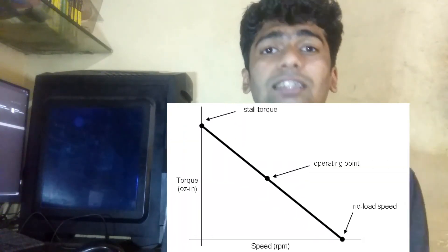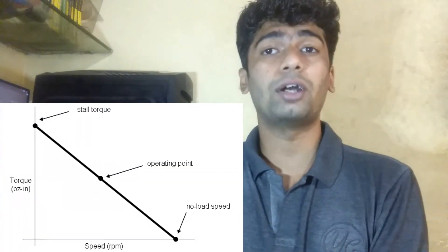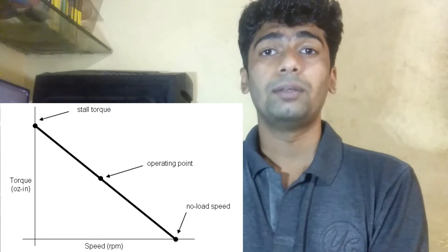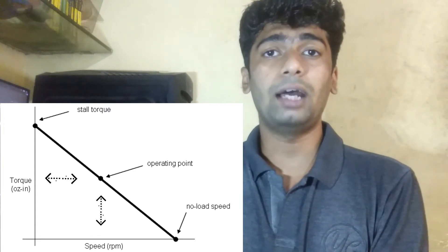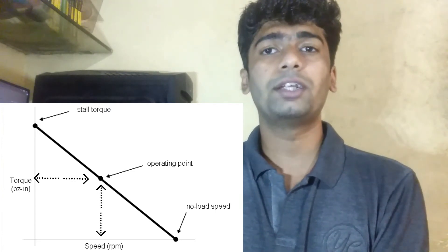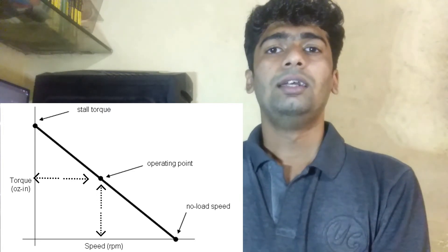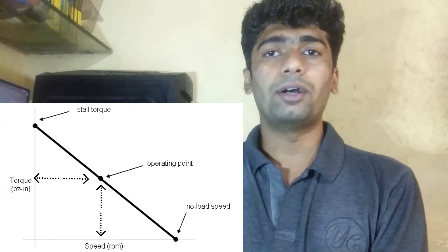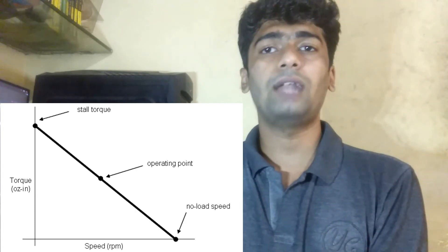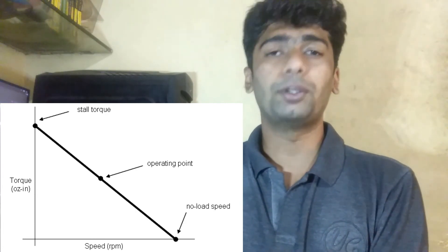We can also understand Stall Torque as the torque required to stop the motor's shaft from rotating. Whereas the Rated Torque is the maximum continuous torque that the motor produces at the rated RPM, when working normally and without overheating — it is the operating torque we would like to operate at for a particular application.